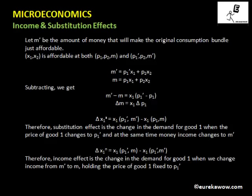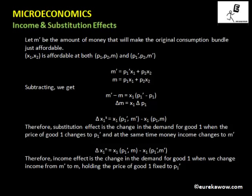Let us start with the original budget line. The prices are P1 and P2 of the two goods and the income of the consumer is M. Now let us look at the Slutsky budget line. According to Slutsky, the substitution effect is such that at new prices, the consumer adjusts the money income in such a way that the original consumption bundle is just affordable.